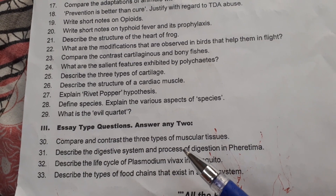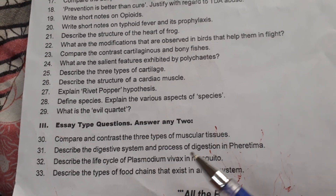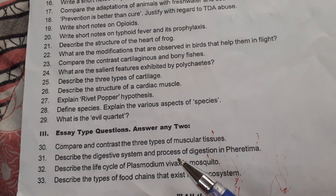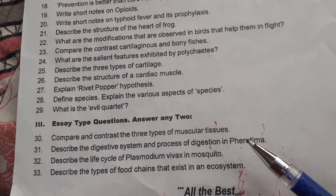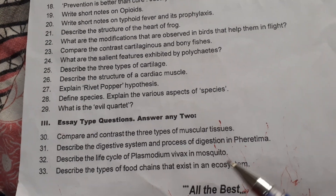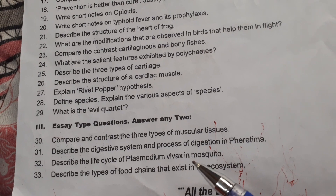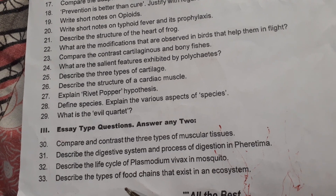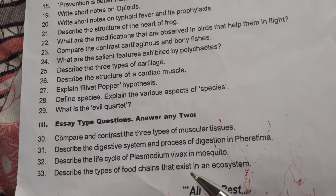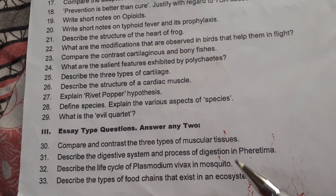The LAQ topics are: compare and contrast the three types of muscular tissues; describe the digestive system and process of digestion in Pheretima; describe the life cycle of Plasmodium vivax in mosquito; and describe the types of food chains that exist in an ecosystem. So 4 questions are given.